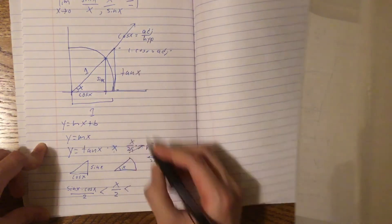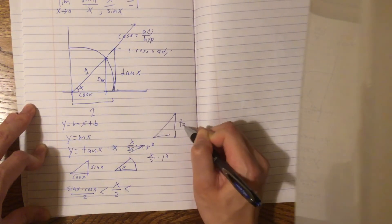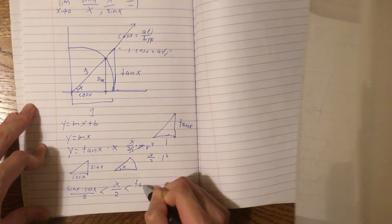And lastly, the area of this final big triangle here, with height tan x, and base 1 is just tan x over 2.